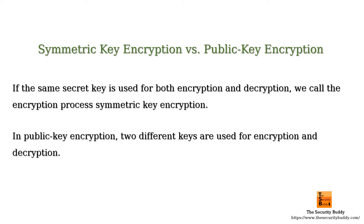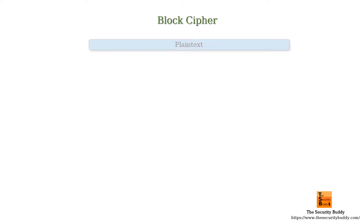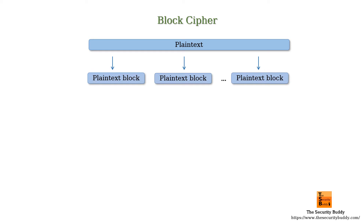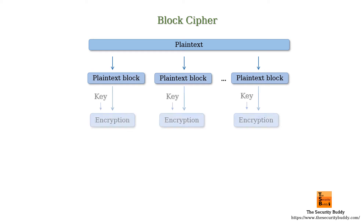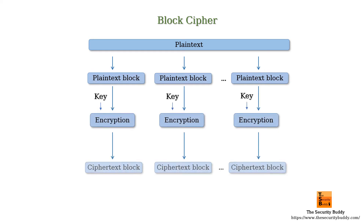A block cipher uses symmetric key encryption to encrypt a block of data. A block of data is a fixed length group of bits. A block cipher operates on a block of plain text and generates a block of cipher text.